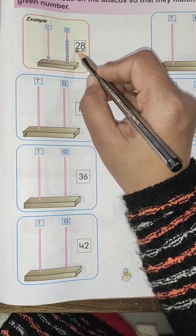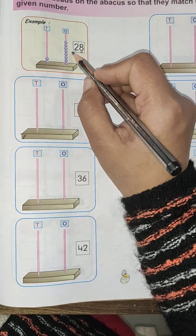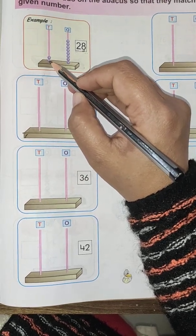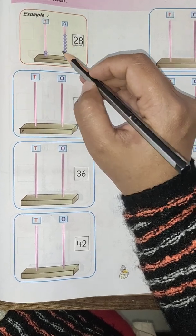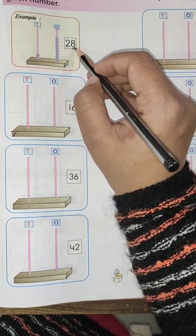Now, in place of tens, the number is 2. So we draw here 2 beads: 1, 2. Now match 2 and 8.